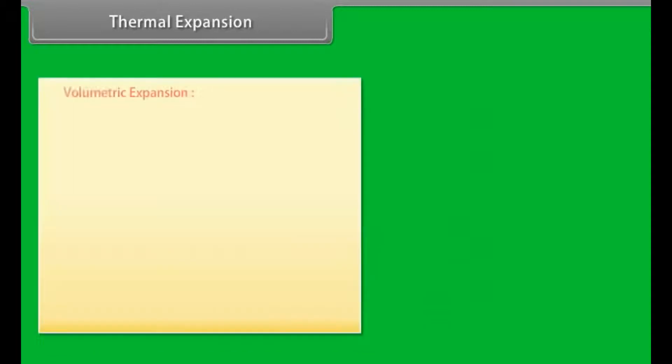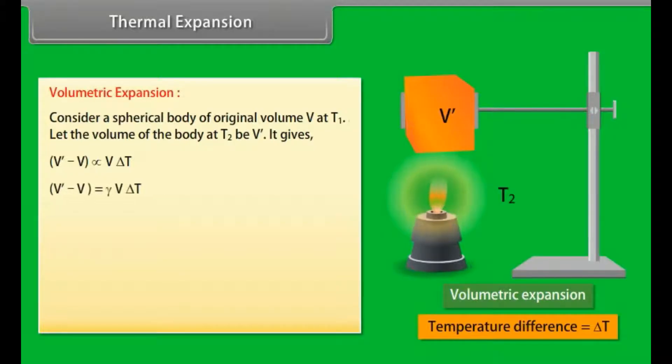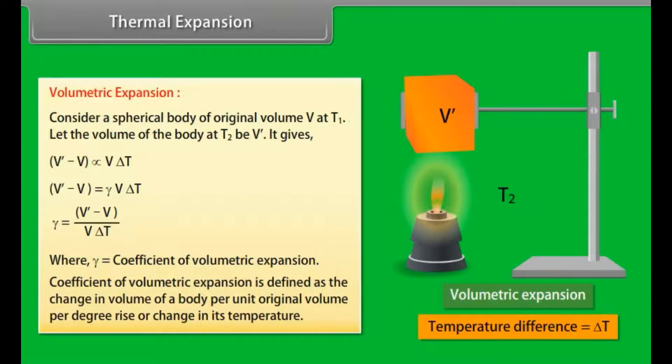Volumetric expansion. Consider a spherical body of original volume V at temperature T₁. Let the volume of the body at temperature T₂ be V'. It gives V' - V ∝ V ΔT or V' - V = γ V ΔT. Value of γ = (V' - V)/(V ΔT), where γ = coefficient of volumetric expansion. Coefficient of volumetric expansion is defined as the change in volume of a body per unit original volume per degree rise or change in its temperature.